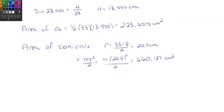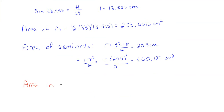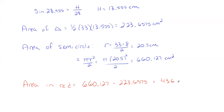The overall red area is the semicircle area minus the triangle area: 660.127 − 223.6575 = approximately 436.47 centimeters squared. That's rounded off, and that is the area of the red region inside the semicircle.